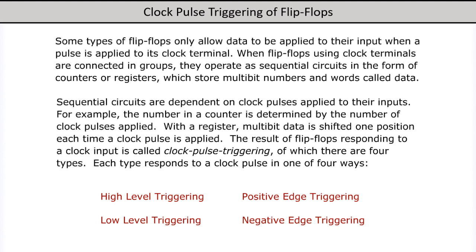With the register, multibit data is shifted one position each time a clock pulse is applied. The result of flip-flops responding to a clock input is called clock pulse triggering, of which there are four types. Each type responds to a clock pulse in one of four ways.